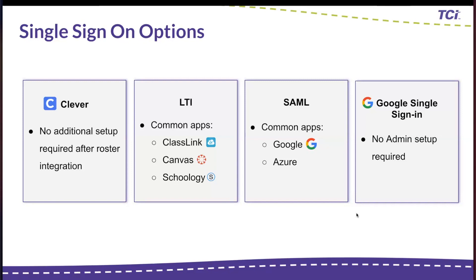A common question we get is: can you have more than one? The answer is yes. These are just different doors to the same place — TCI. So it doesn't matter if you're using Clever and you also want to use LTI in Canvas; we see that very commonly. It's up to you as administrators to decide whether you want to let them use multiple ways to get in or be more strict about where you want them to access TCI from.